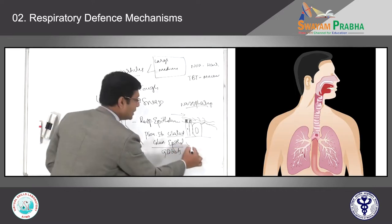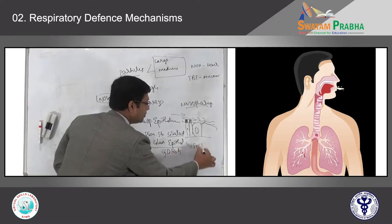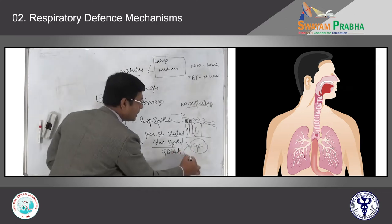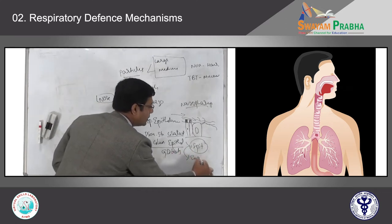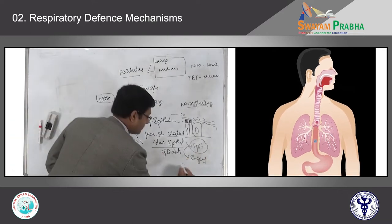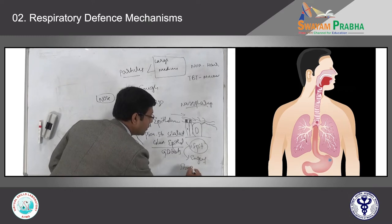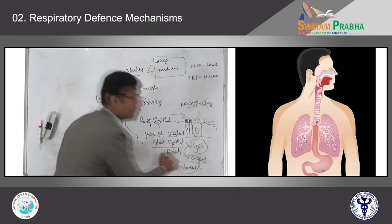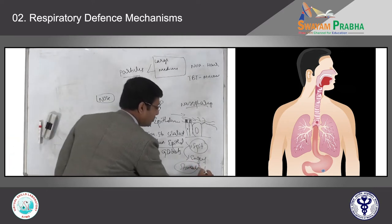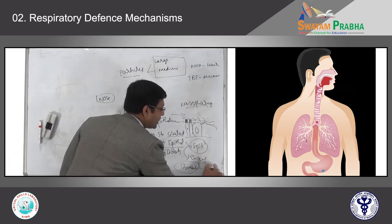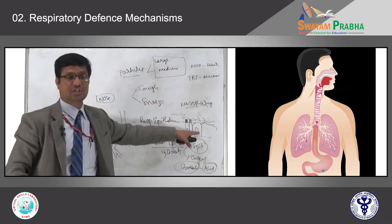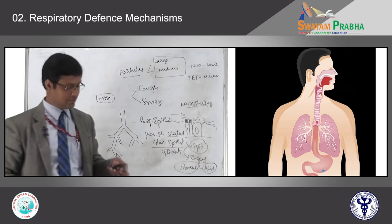Finally, you will either spit that mucus outside or swallow it into the stomach. When it enters the stomach, the strong acid secretions will destroy the trapped particles. This mucociliary escalator is the second defense mechanism.